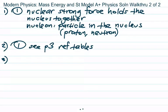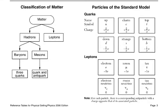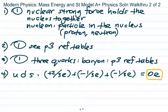Number three: a lambda particle with an up, down, and strange quark — what kind of particle is that? It's made up of three quarks, so it must be a baryon, choice one. Referring to page three of the reference table, it says up, down, and strange quark — that is three quarks, so it's a baryon. Number four asks for the charge of the lambda particle. Up is plus two-thirds e; down and strange are both negative one-third e. So plus two-thirds minus one-third minus one-third equals zero elementary charges — it's neutral.